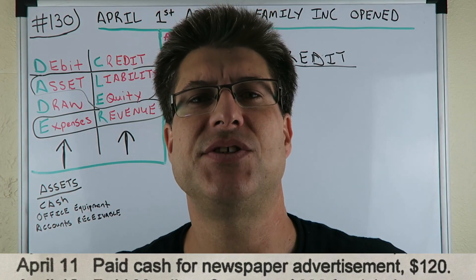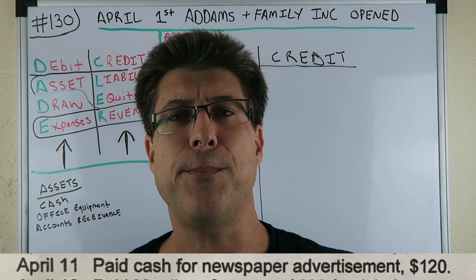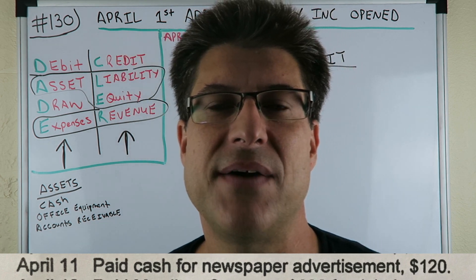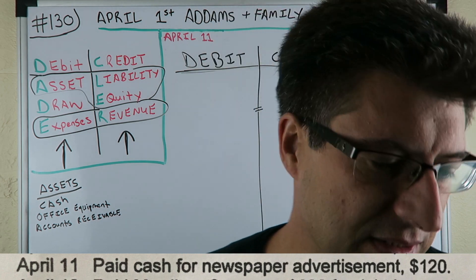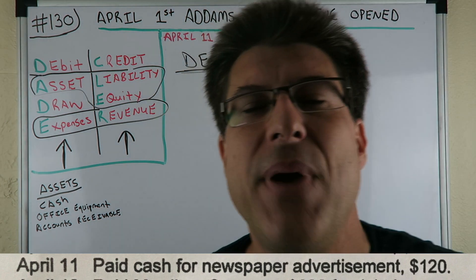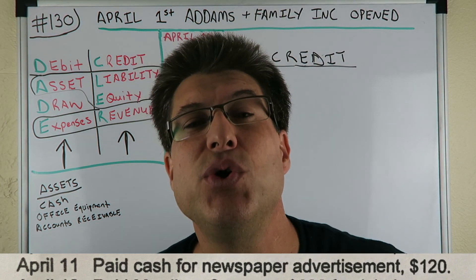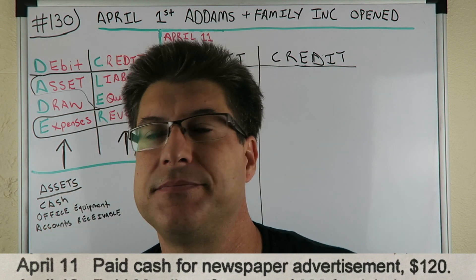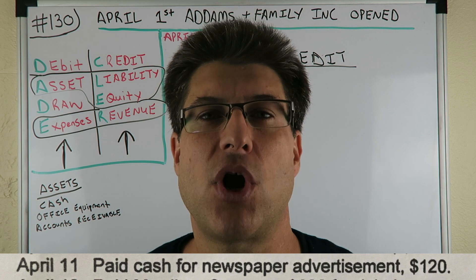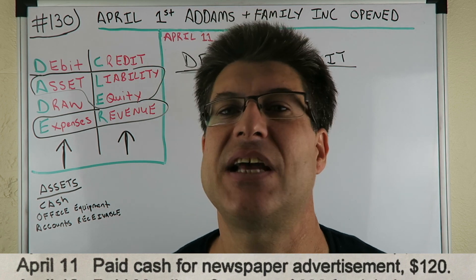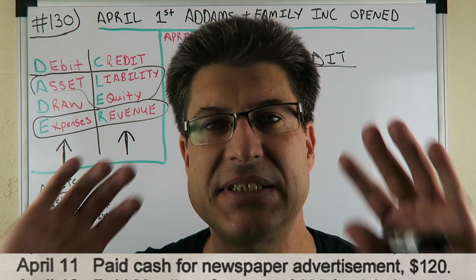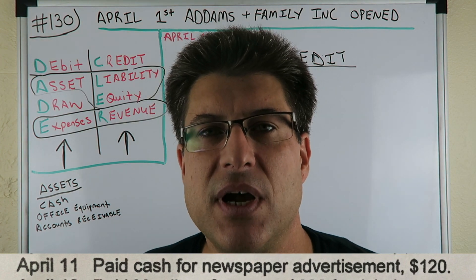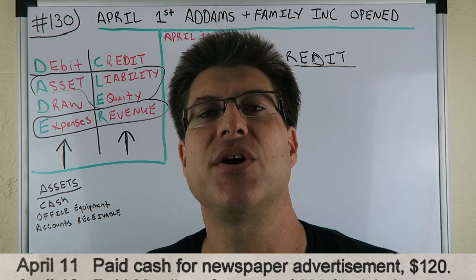As you can see at the bottom of the screen, we have our journal entry and our circumstances — what's going down. Paid cash for newspaper advertisement of $120. What do I always say with journal entries? Do we have cash? Let's get the cash down. Paid cash of $120 for advertisement.